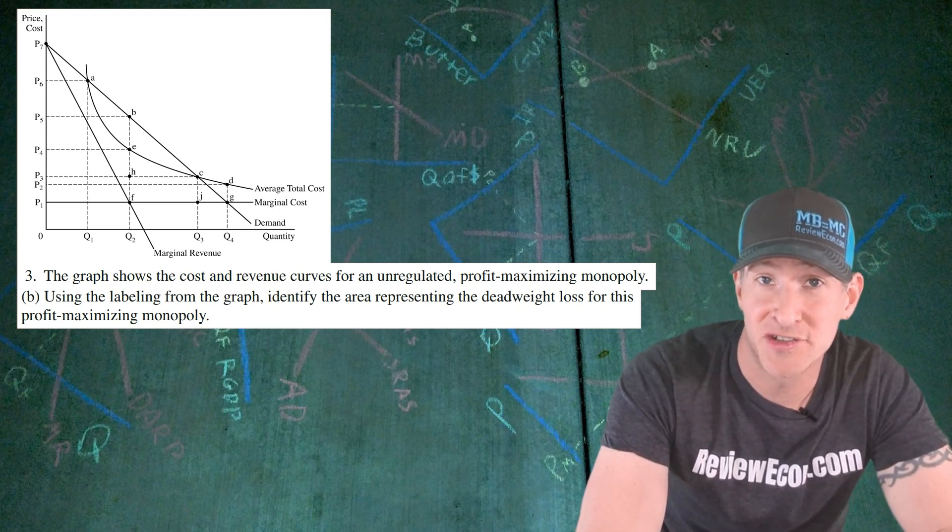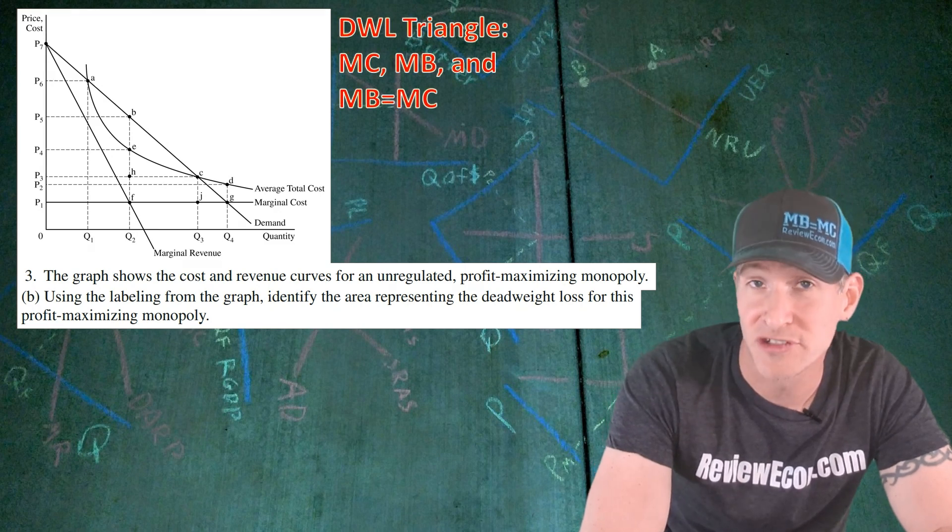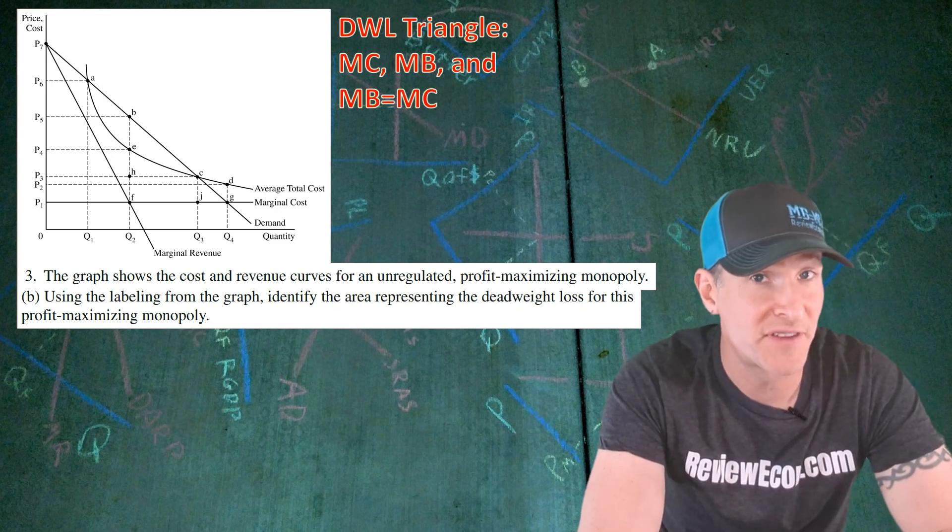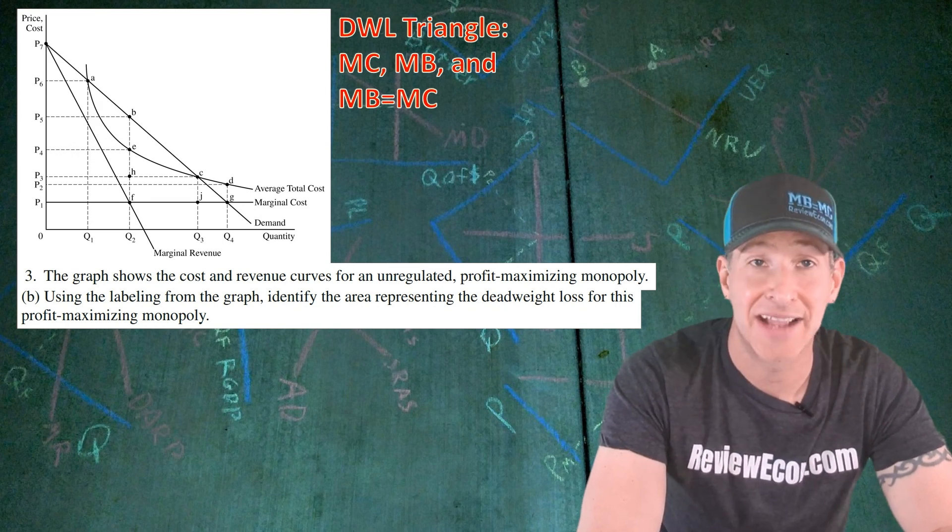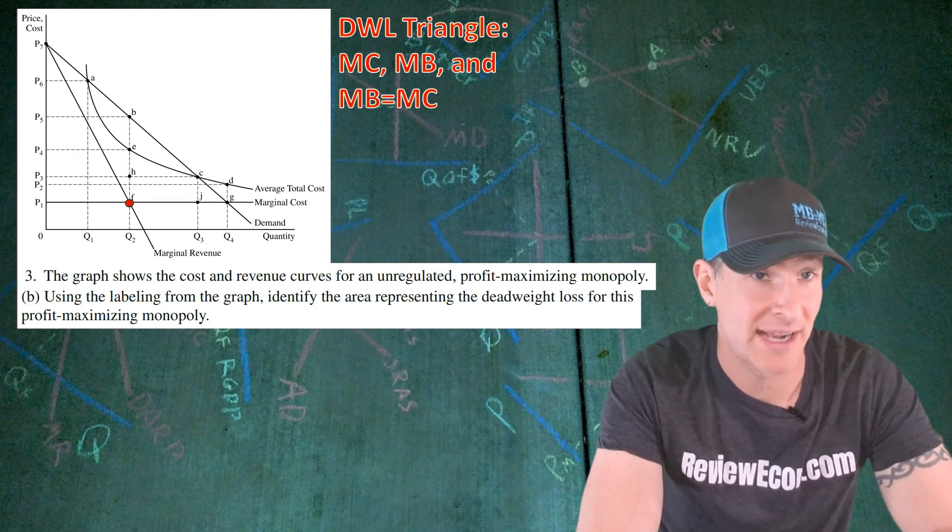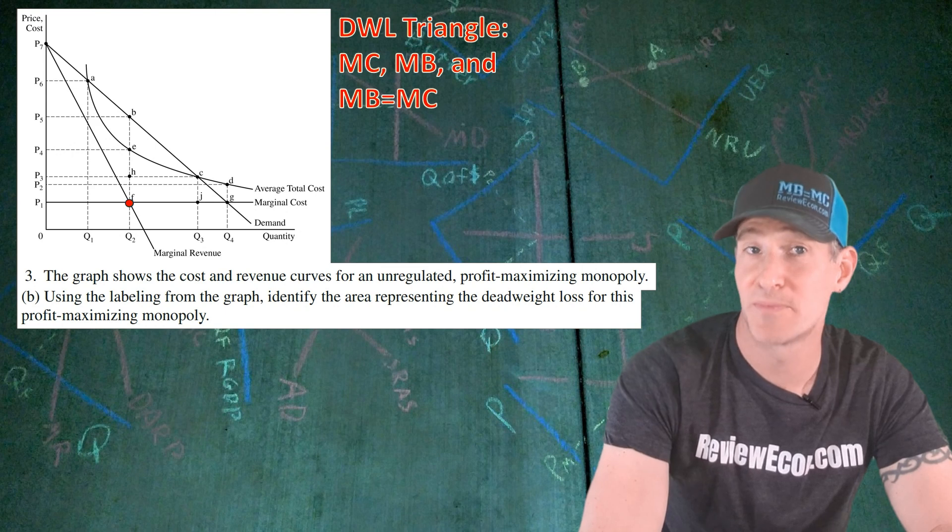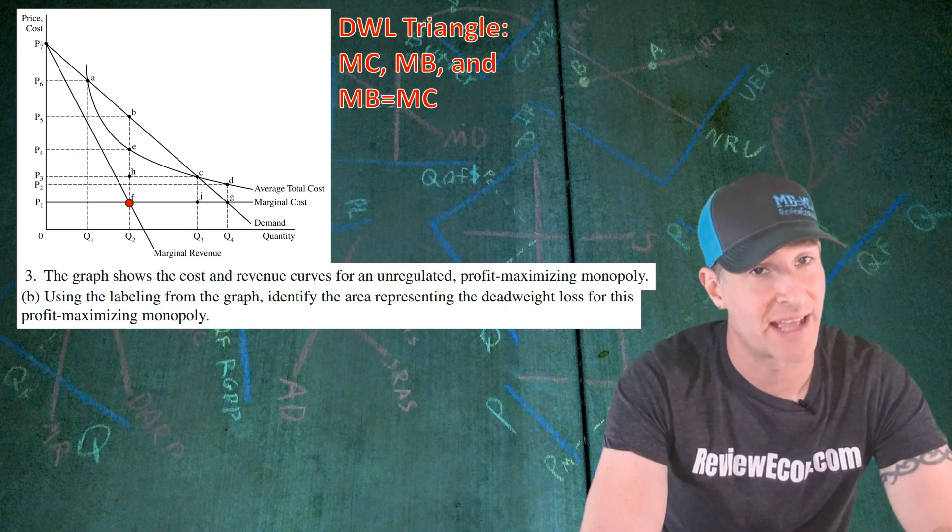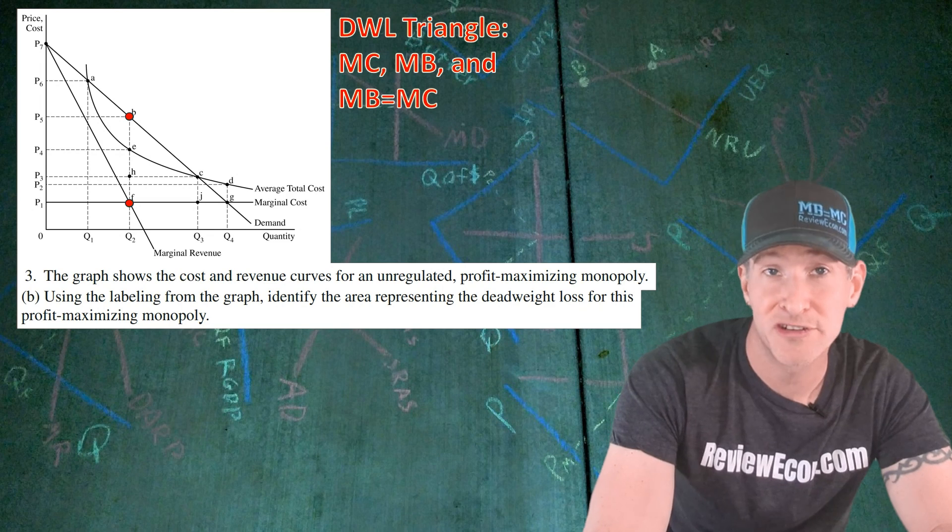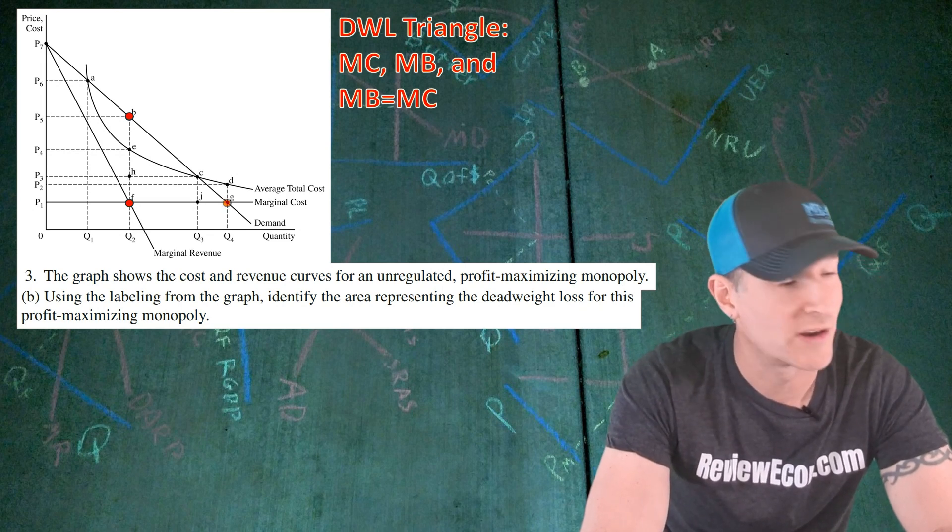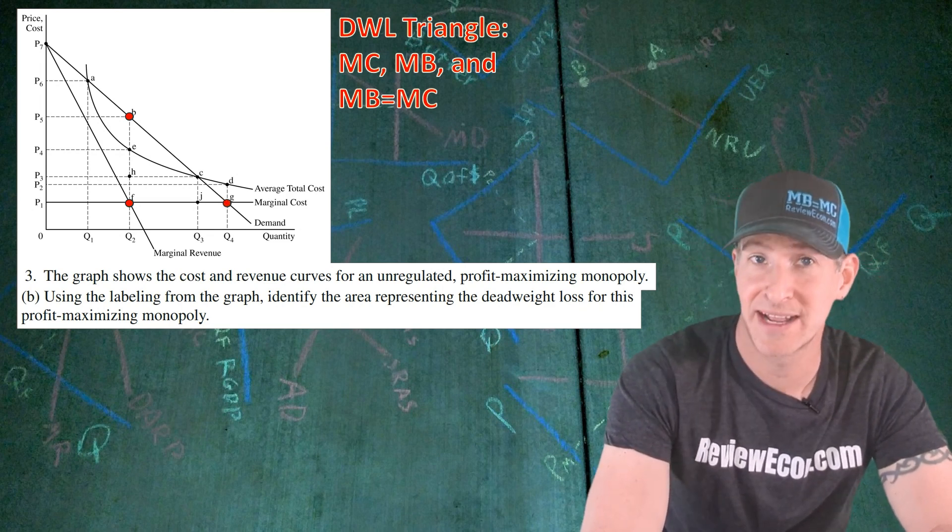To find the deadweight loss triangle at Q2, we need to find the marginal cost of that quantity, the marginal benefit of that quantity, and the marginal benefit equals marginal cost point on the graph. At Q2, we find our marginal cost right there at point F. The marginal benefit curve is the demand curve, so that means the marginal benefit of Q2 is up at point H. And the marginal benefit equals marginal cost point is where the marginal cost curve intersects the demand at point G.